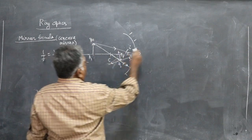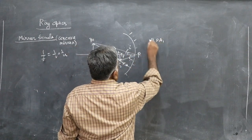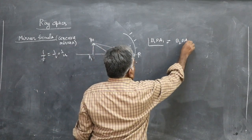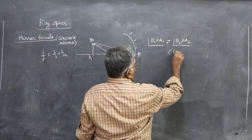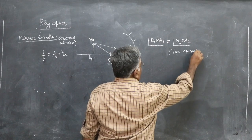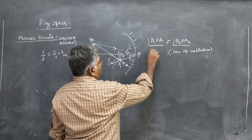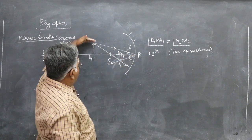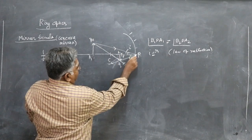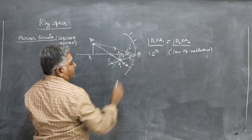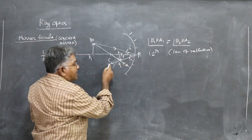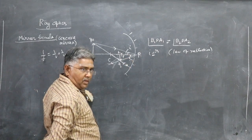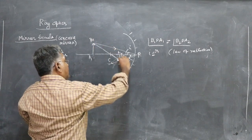Angle B₁PA₁ equals angle B₂PA₂ because of the law of reflection: i = r. The angle of incidence is the angle between the incident ray and the normal; CP is the normal here. The angle of reflection is the angle between the reflected ray and the normal, and they are equal. The second ray passes through the center of curvature and retraces its path.